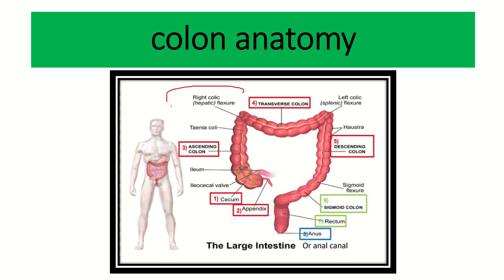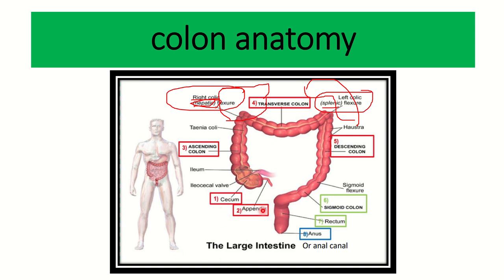We can also see two important structures: the right colic flexure and the left colic flexure. The right colic flexure is also known as the hepatic flexure because the liver is located at this place. On the left side, it is known as the splenic flexure because the spleen is also located at this site.